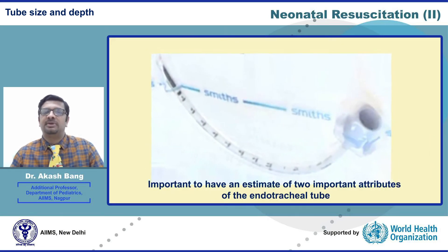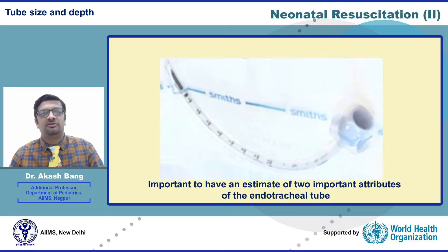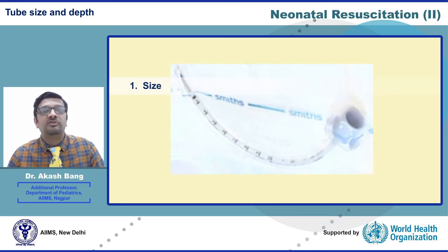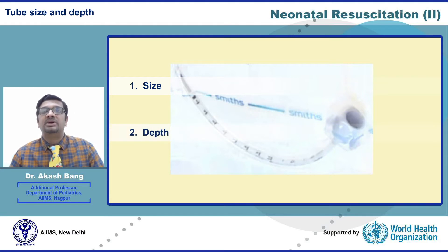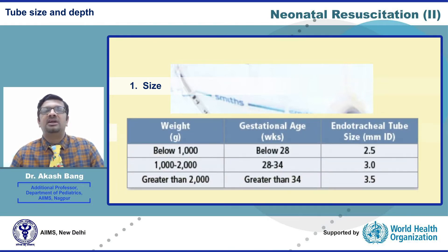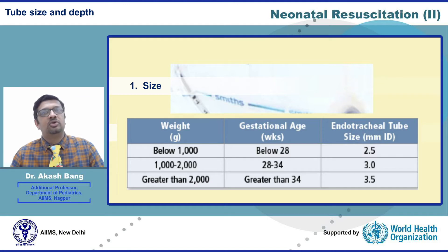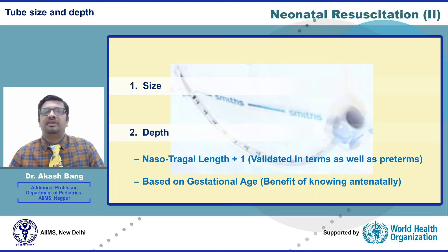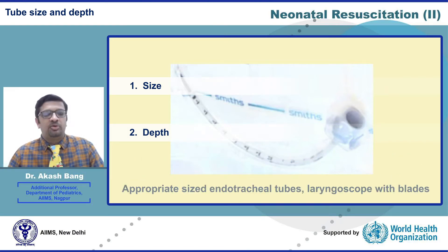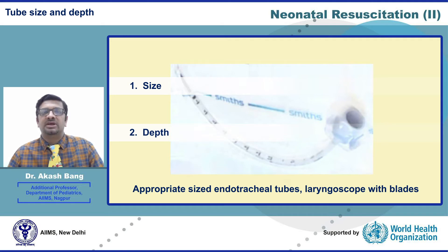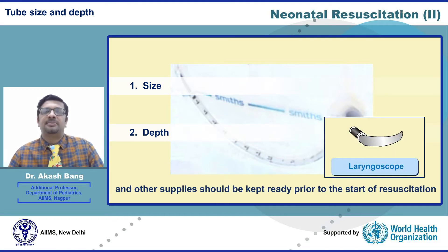Before the actual procedure of intubation, it is important to have an estimate of two important attributes of the endotracheal tube: first, what will be the appropriate size, and second, how much will be the depth of insertion. Standard tables based on gestational age and weight can be useful guides, with the benefit of knowing these antenatally. Additionally, actual measurement of nasotracheal length may help in guiding the insertion depth.